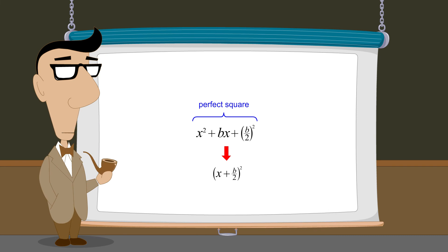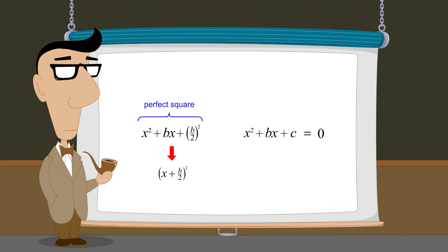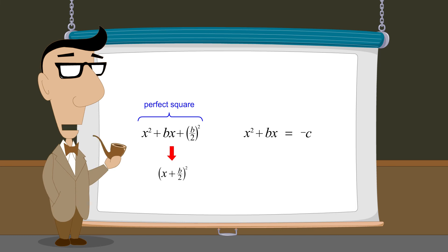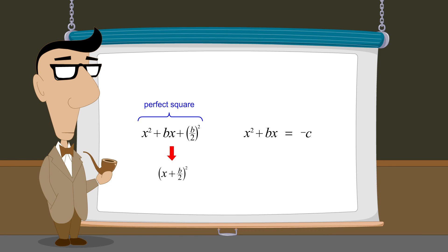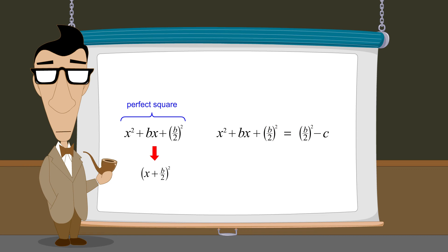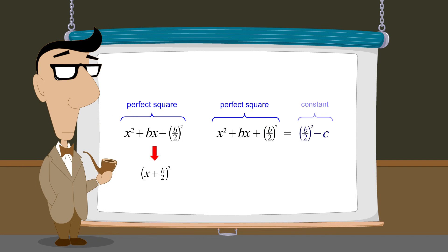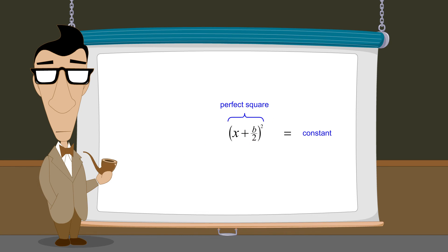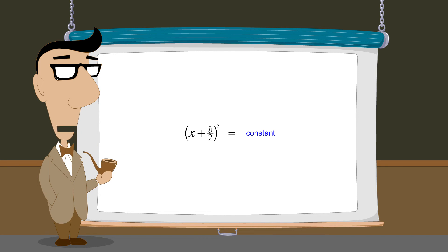Using this fact, we can solve any quadratic equation in the form x-squared plus bx plus c equals zero by changing the quadratic's constant term to have a value of b over 2-squared. This can always be accomplished by subtracting c from both sides and then adding b over 2-squared to both sides. This gives us a perfect square expression equal to a constant. We can then write the perfect square quadratic as x plus b over 2 quantity squared.